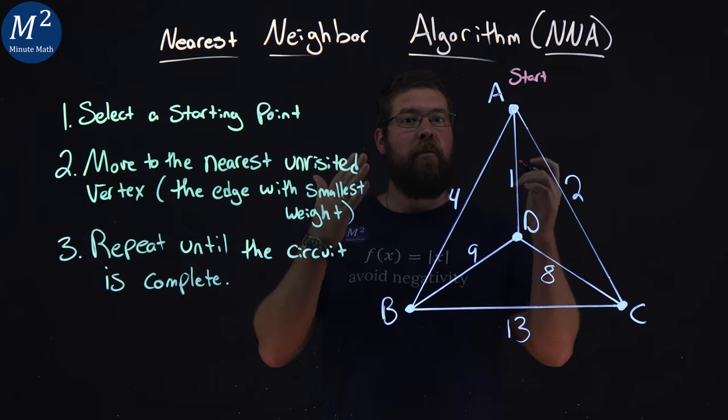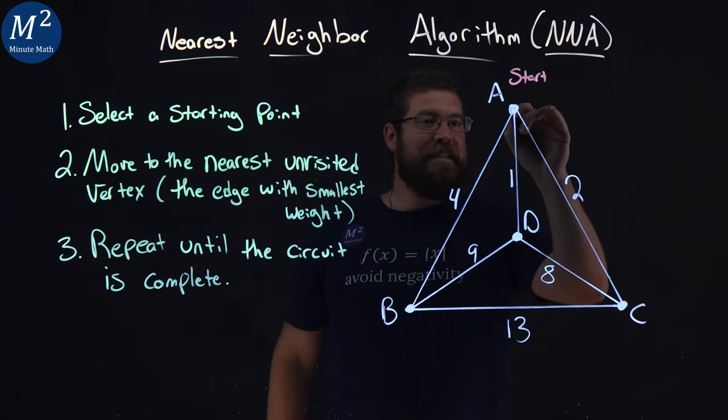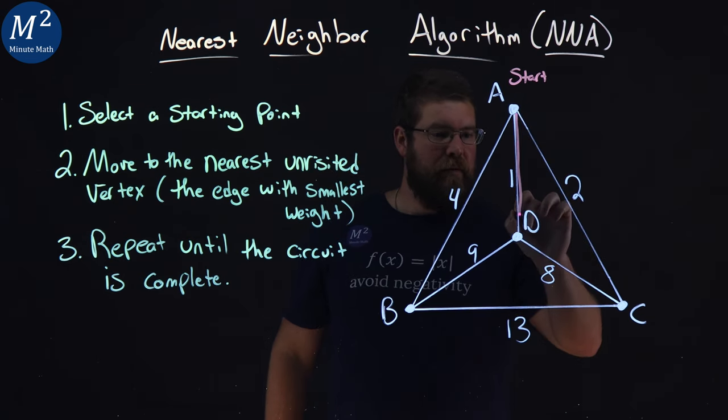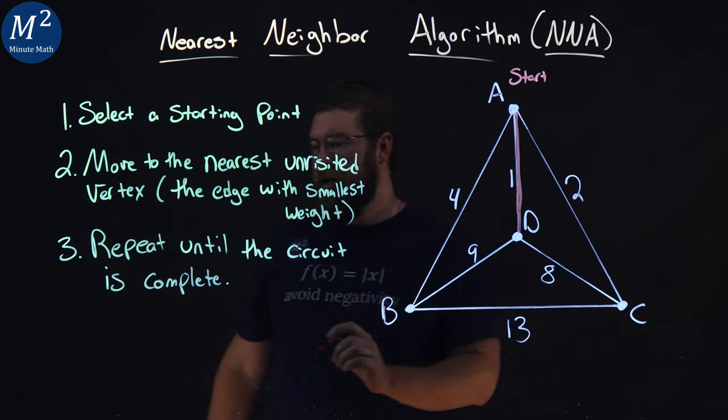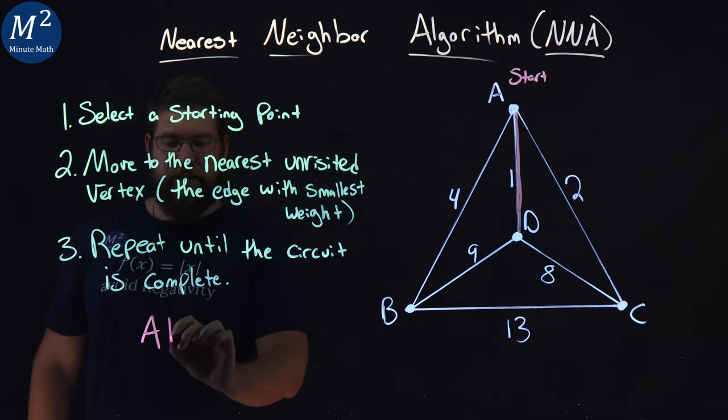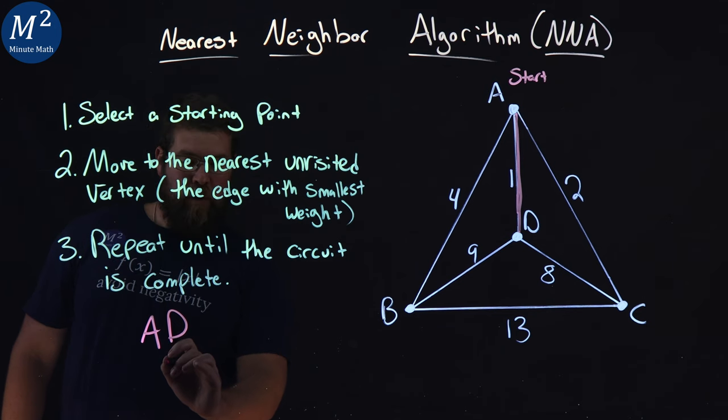So in this case, I would go from A to D. So I'm going from A to D, and I can write it out here, A to D. And we can even note here that was a weight of 1 between A and D.